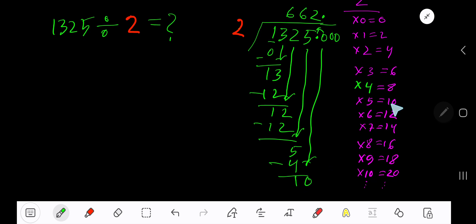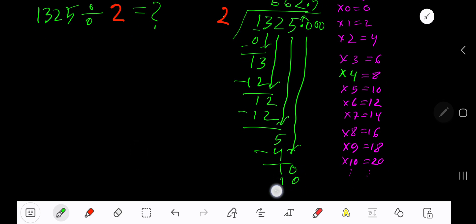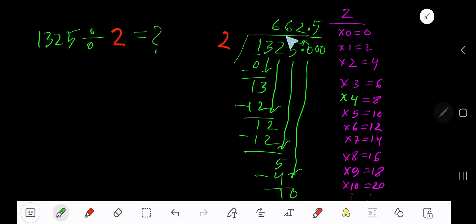2 goes into 10 five times. Write 5 here. 5 times 2 is 10, subtract, 0. As our remainder is 0, we are done. So our answer is 662 decimal 5, or 662.5.